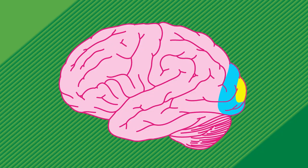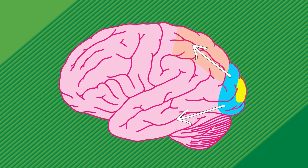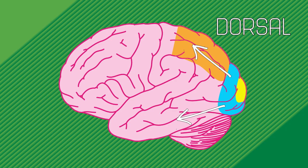In V2, visual information splits into two streams: the dorsal stream, which is processed up on top of your brain in the parietal lobe, and the ventral stream, processed down below in the temporal lobe.